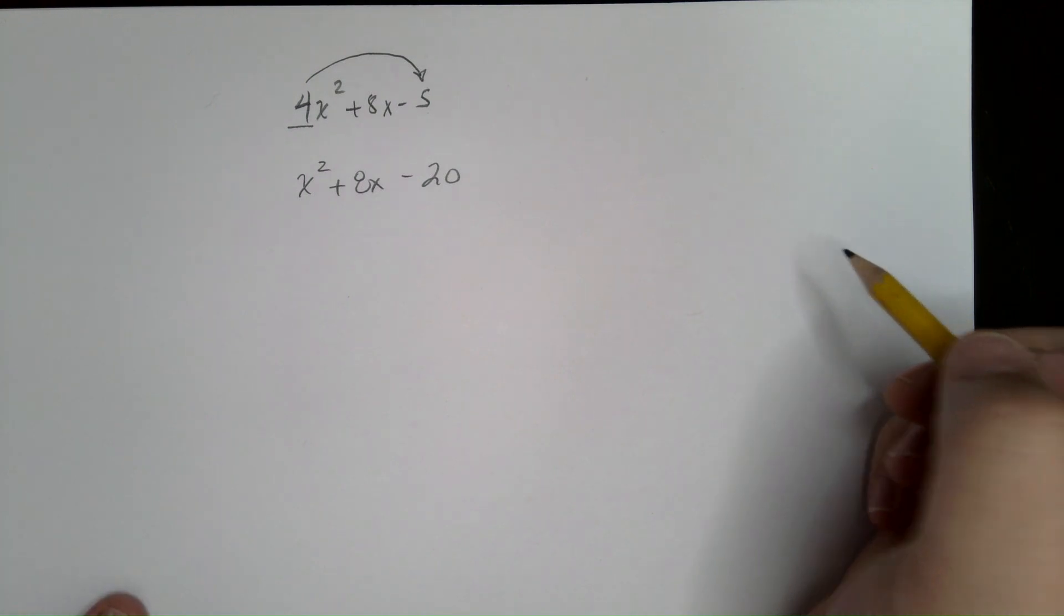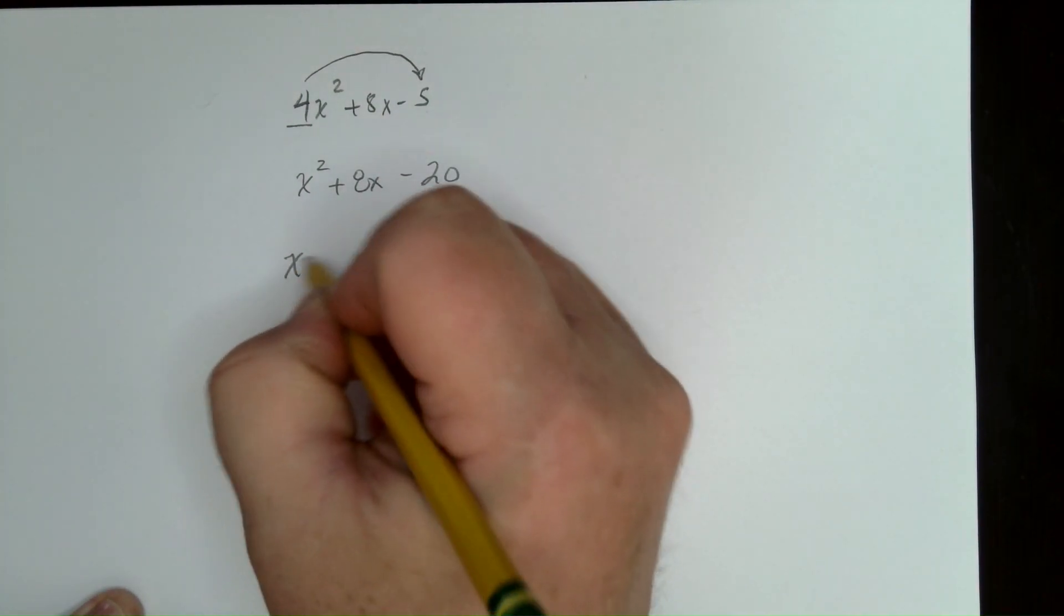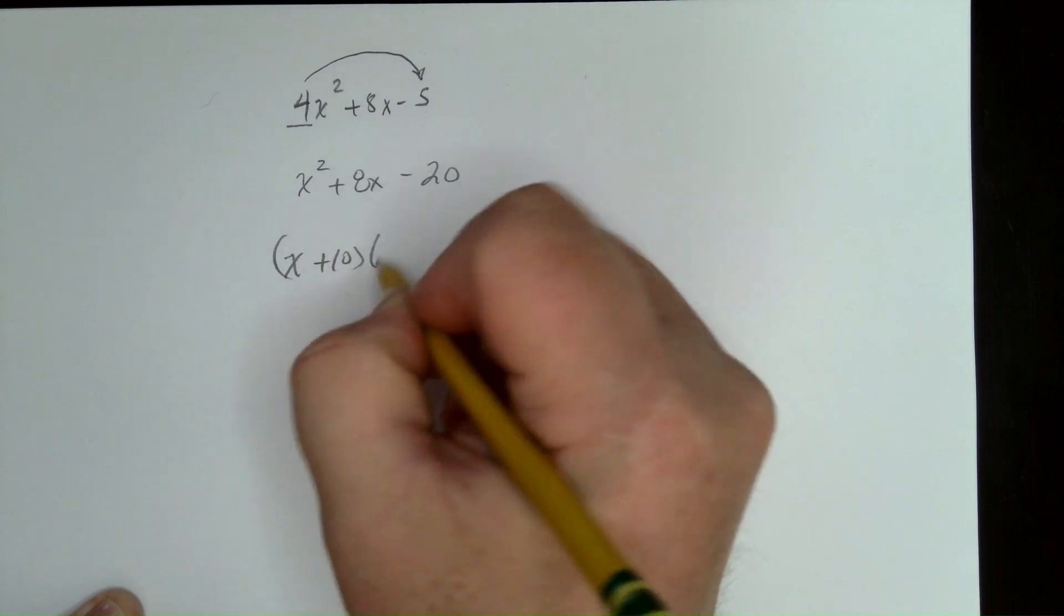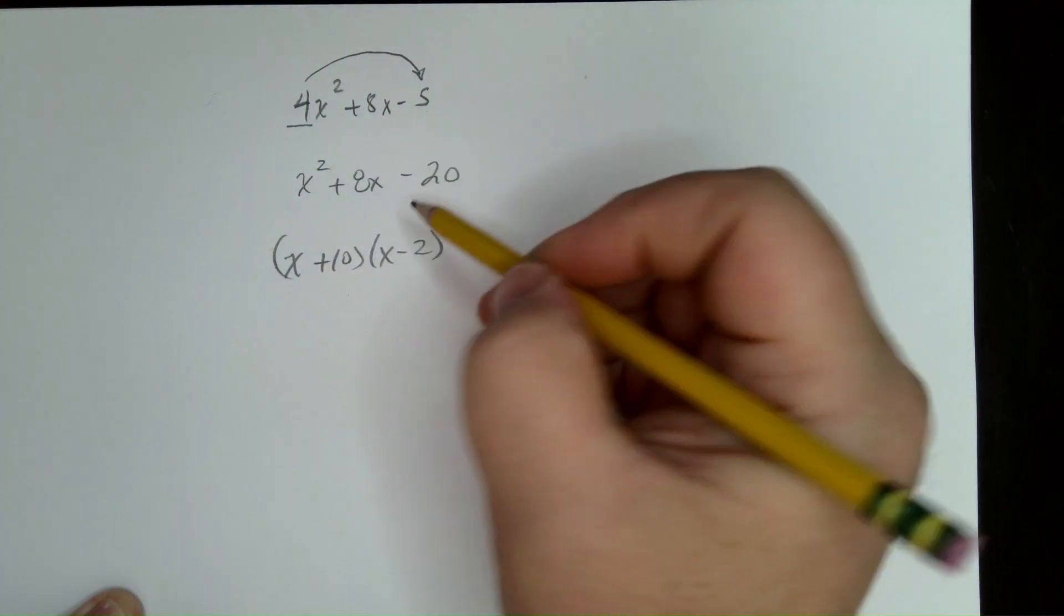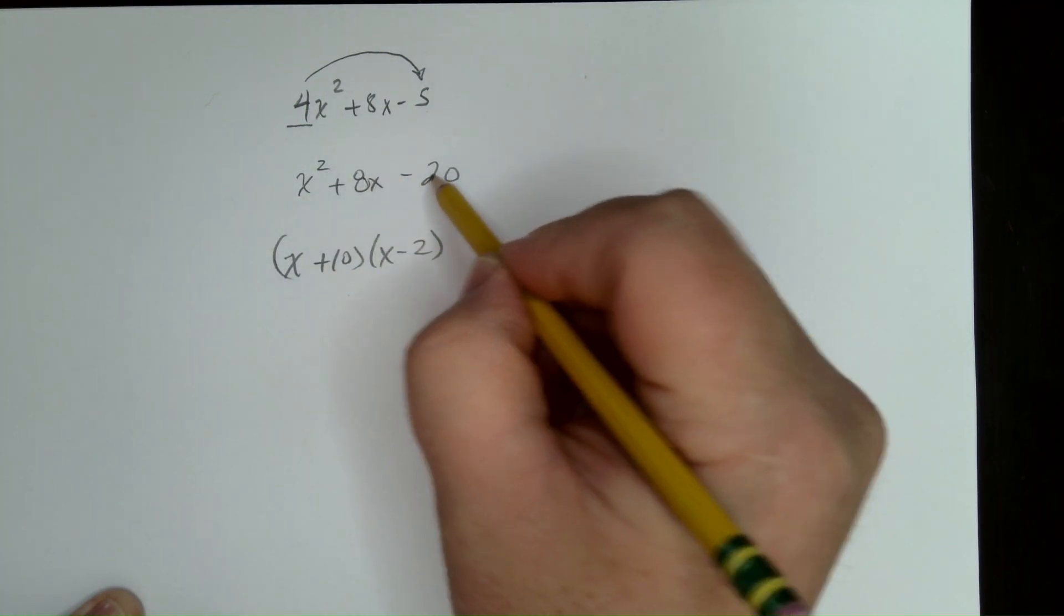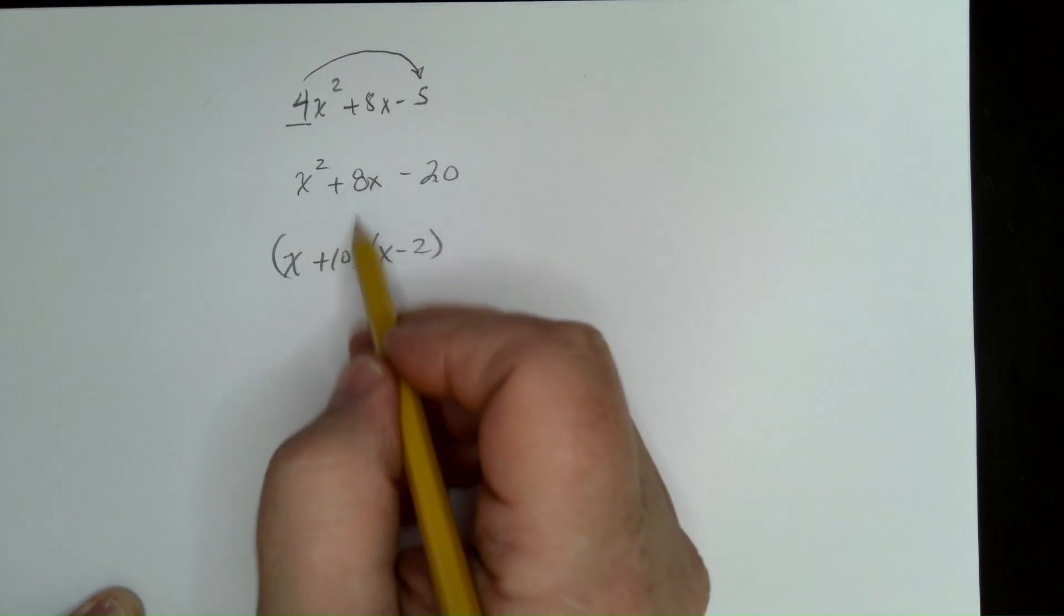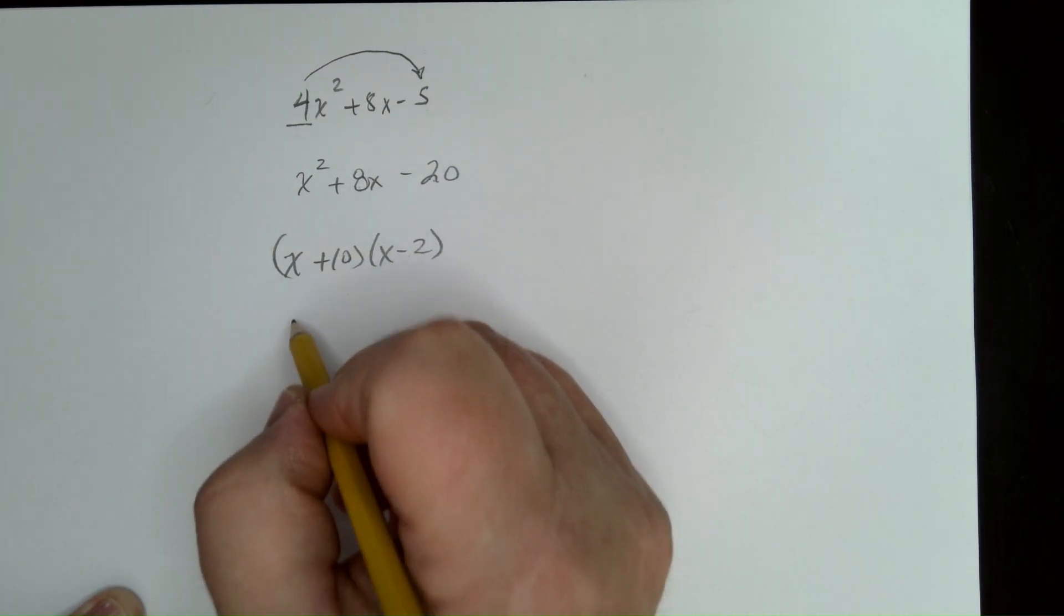So, now we're looking for the two numbers. Multiply to 20, add to 8. That would, of course, be 10 and 2. One's positive, one's negative. Because remember, if c's negative, then they're different signs. The bigger number will have the sign of b.